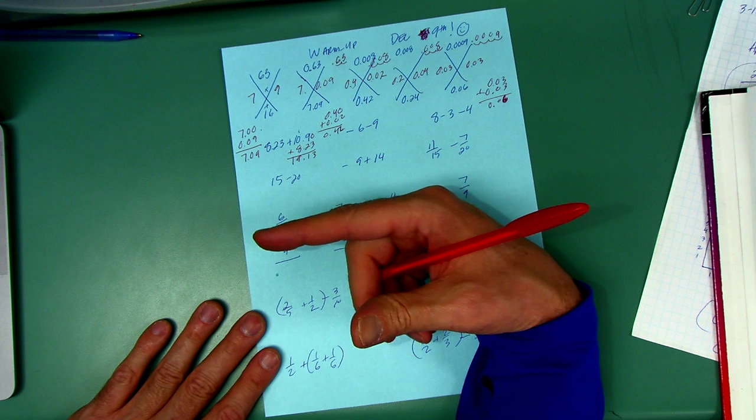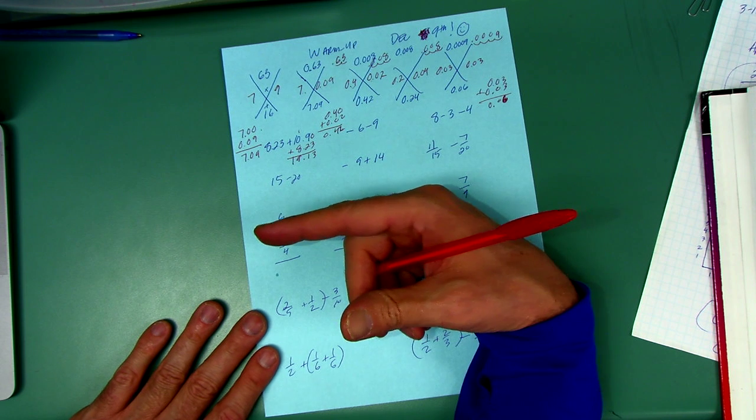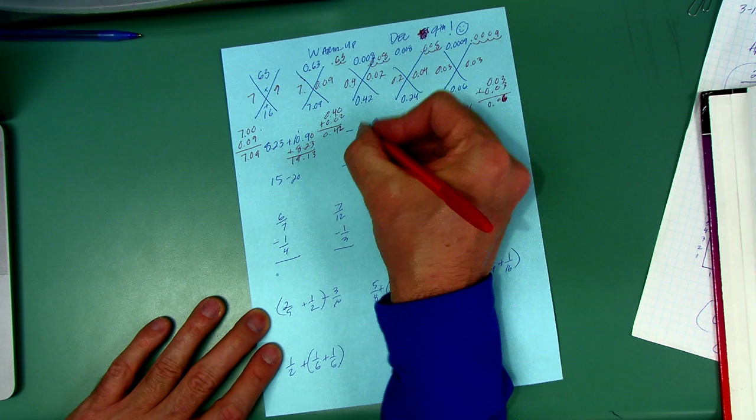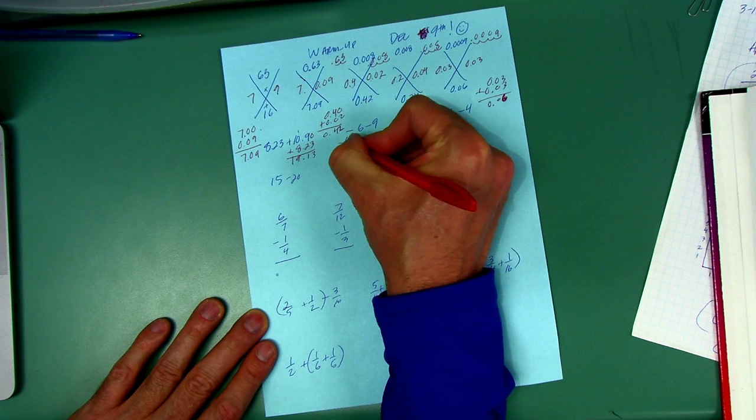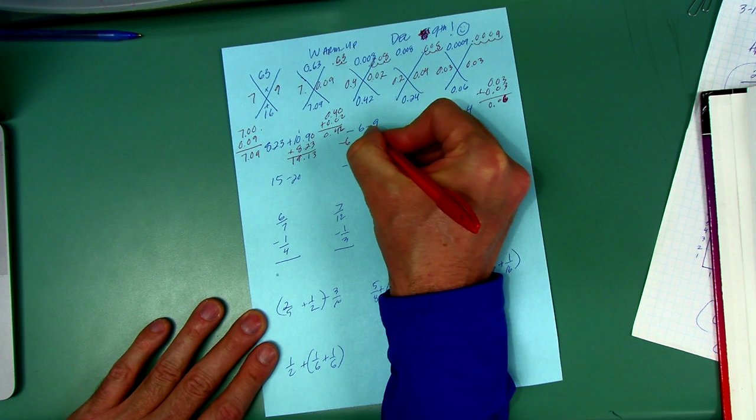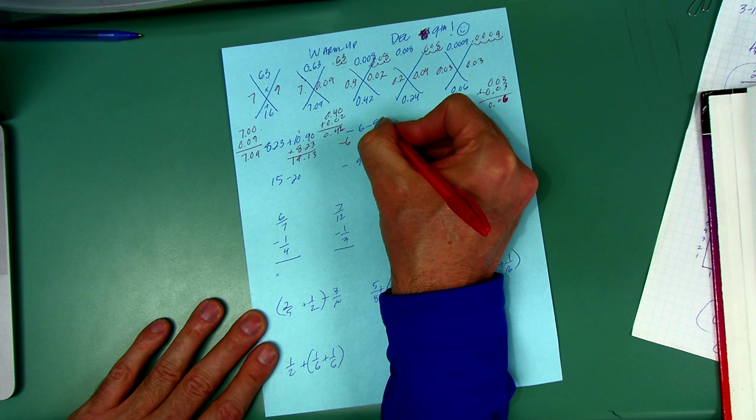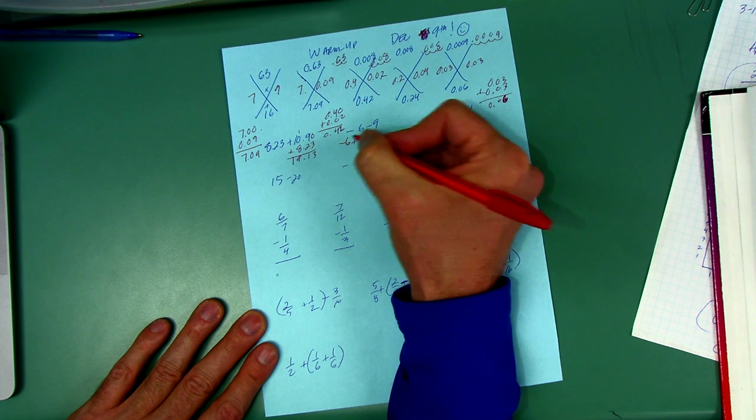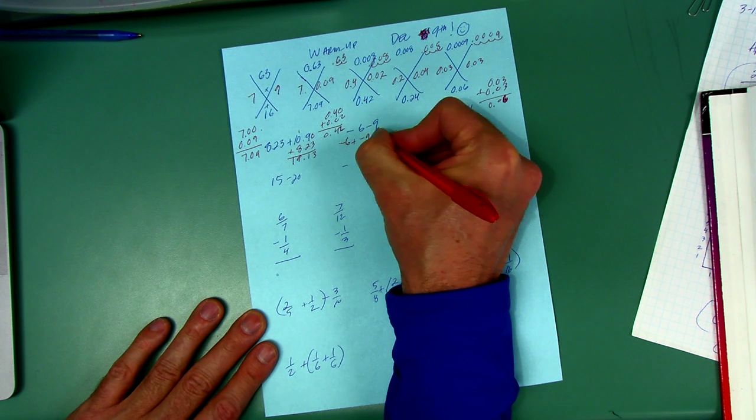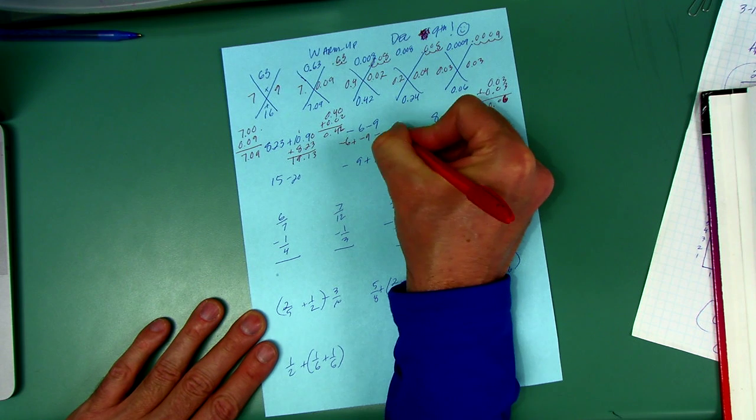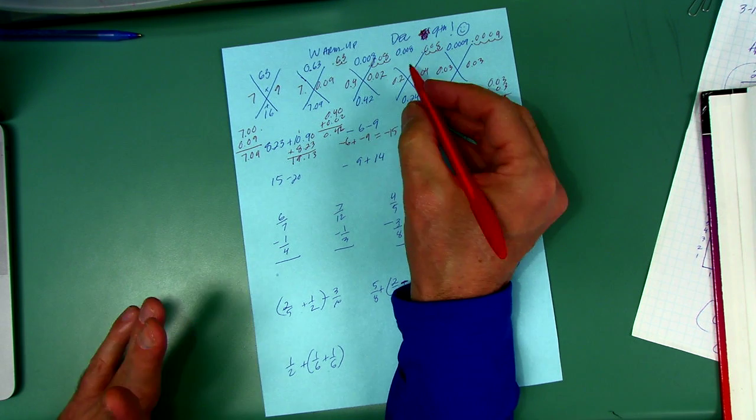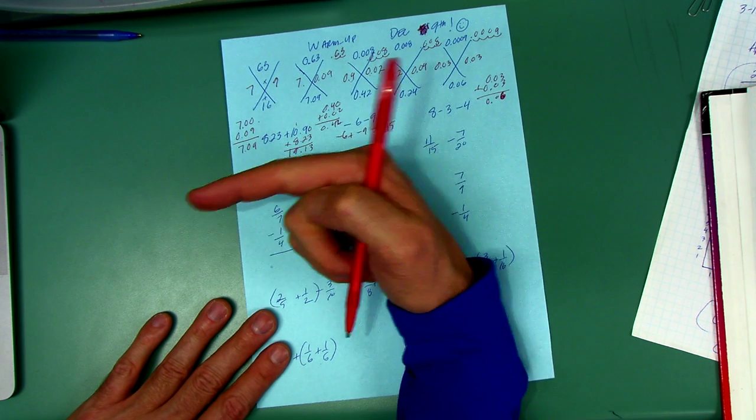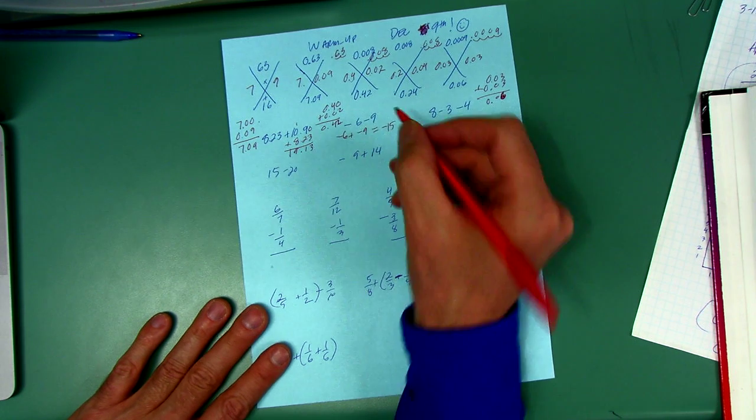I started on the number line at negative 6, and I subtracted 9. That means I went that way, nine more. You can always turn all of your subtracting integer problems into adding the opposite. So this negative 6, instead of subtracting 9, I'm going to add negative 9. I owe 6 plus I owe 9 more, I owe 15. Go back to the number line, you start at negative 6, then I subtract 9, I go that way nine more spots, it's going to be negative 15.